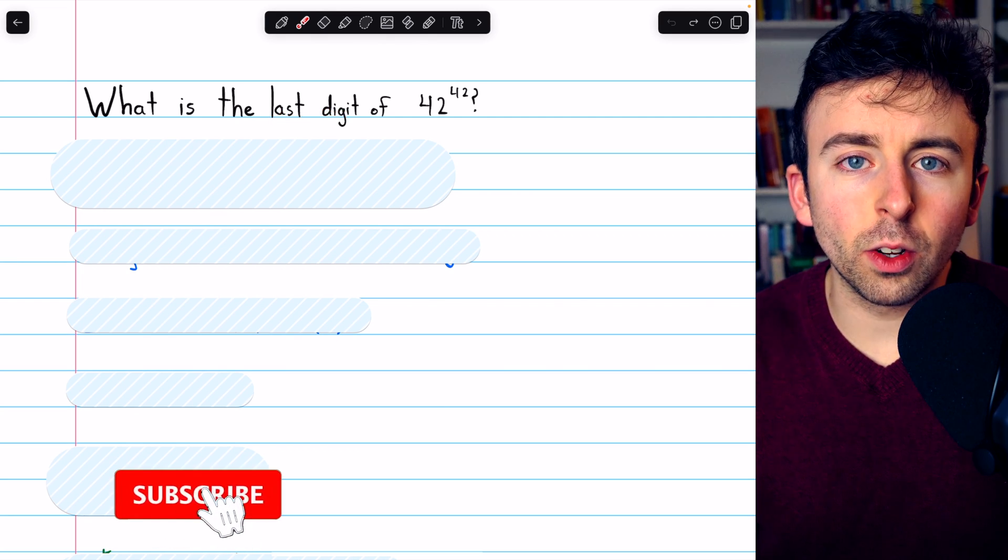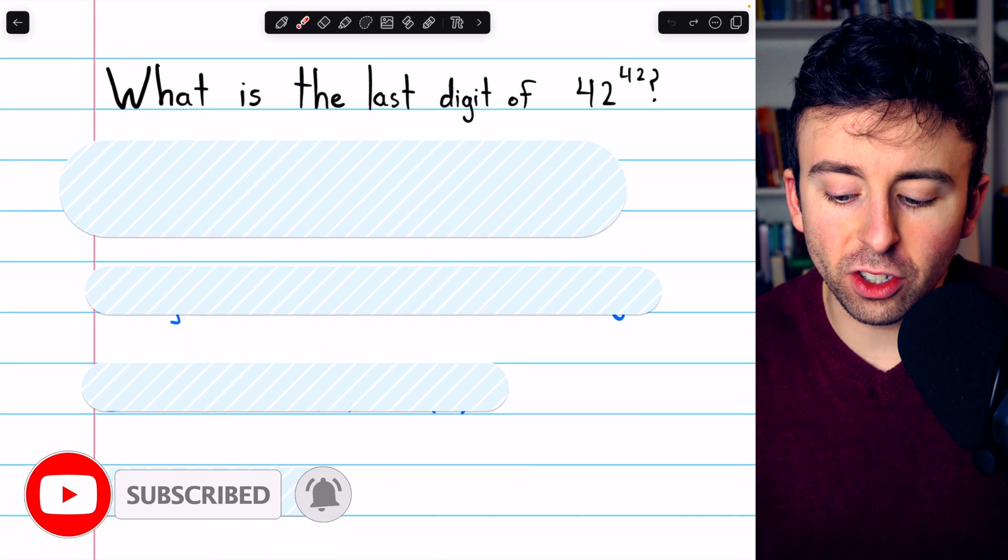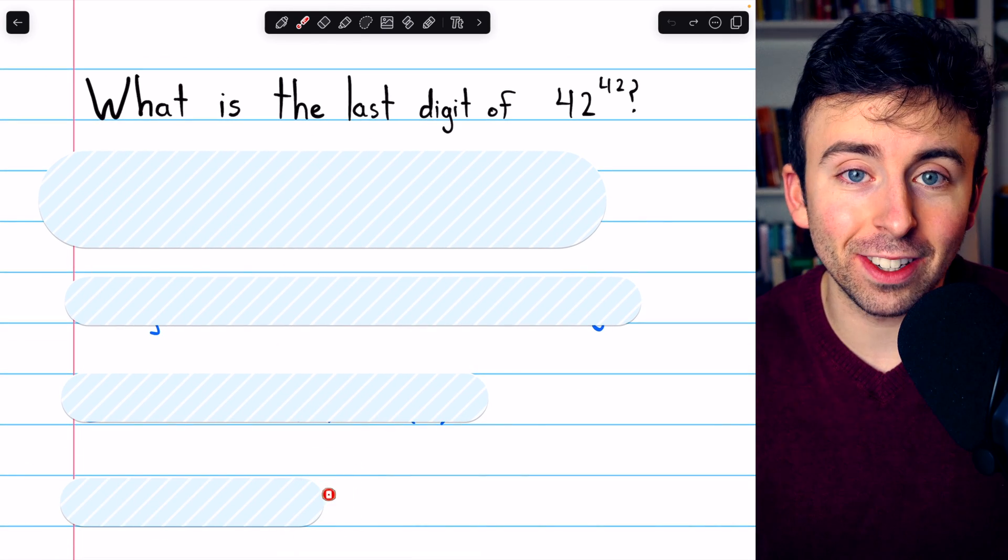What is the last digit, or unit's digit, of this massive number, 42 to the power of 42?